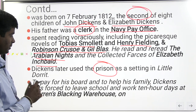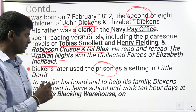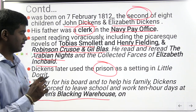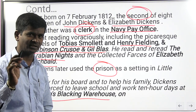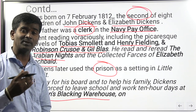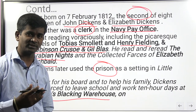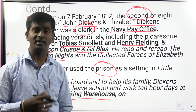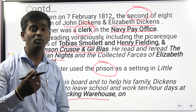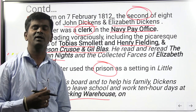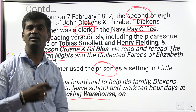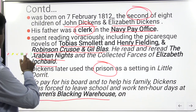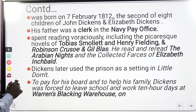To pay for his board and to help his family, Dickens worked in Warren's Blacking Warehouse 10 hours a day to support his family, because his father was arrested for debt and put under bars. His family was forced to work and earn money in order to pay debts.